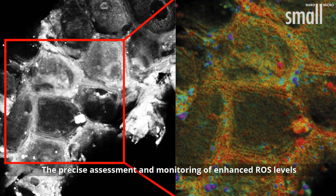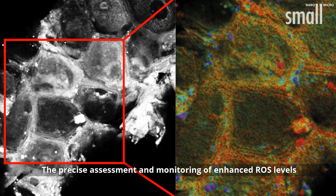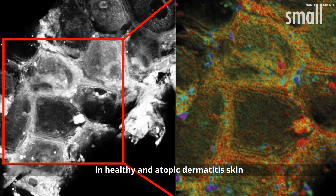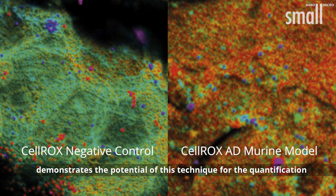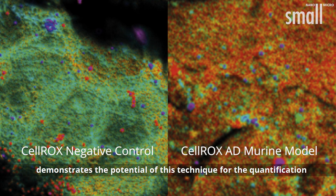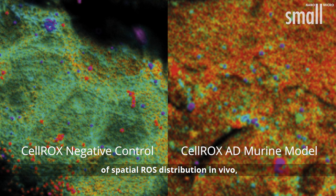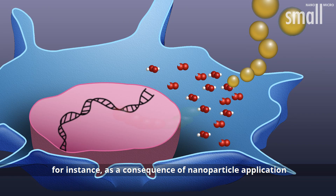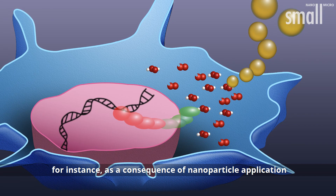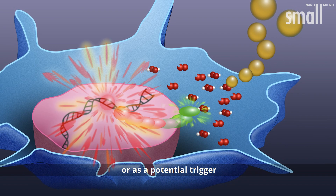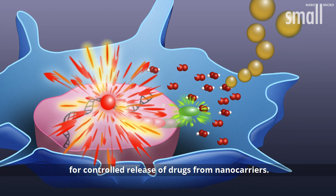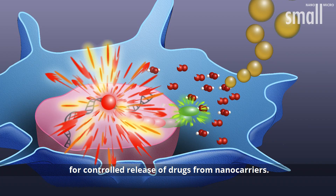The precise assessment and monitoring of enhanced ROS levels in healthy and atopic dermatitis skin demonstrates the potential of this technique for the quantification of spatial ROS distribution in vivo, for instance, as a consequence of nanoparticle application or as a potential trigger for controlled release of drugs from nanocaries.